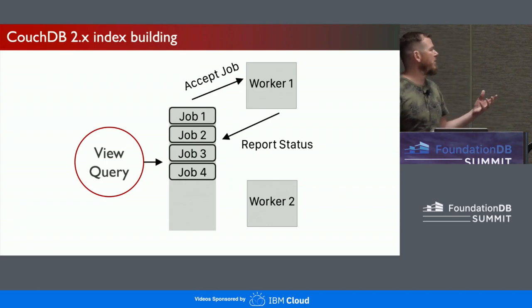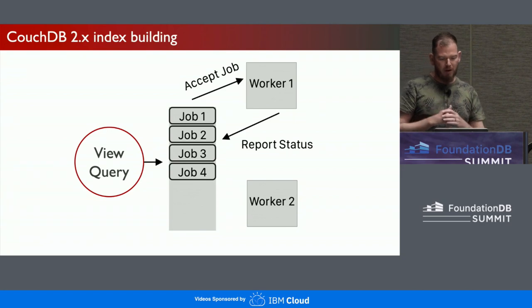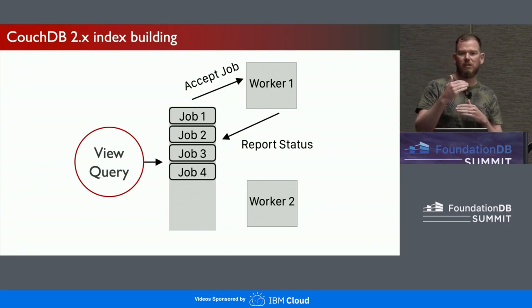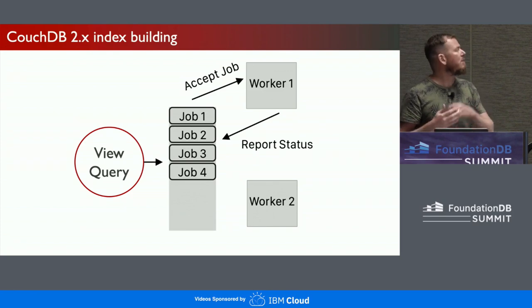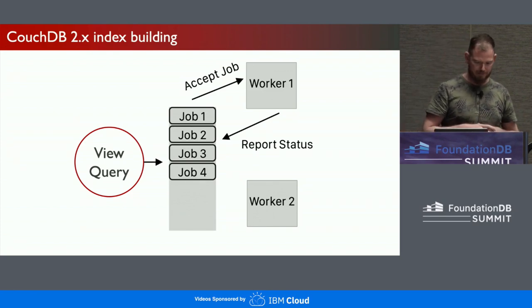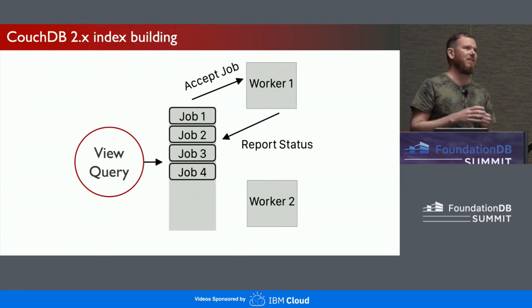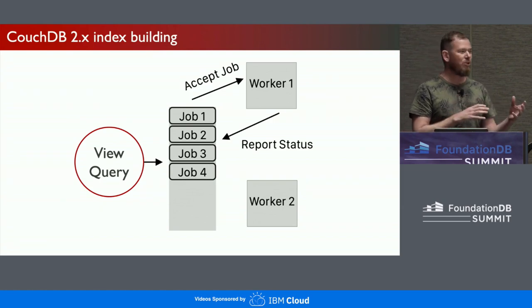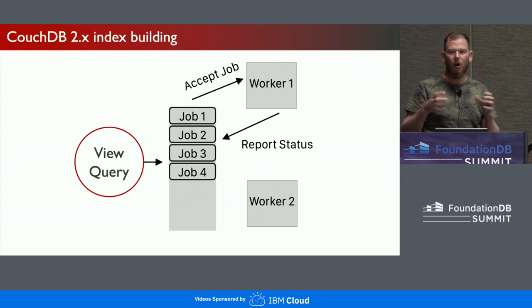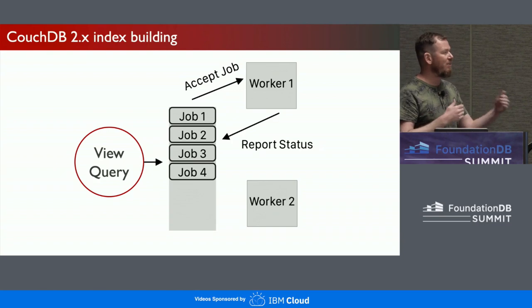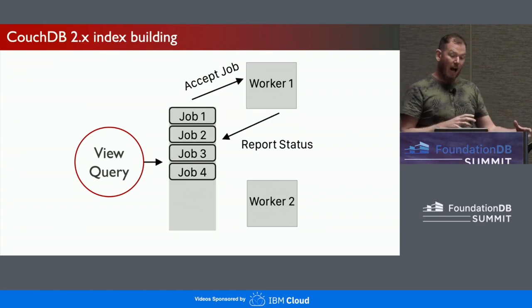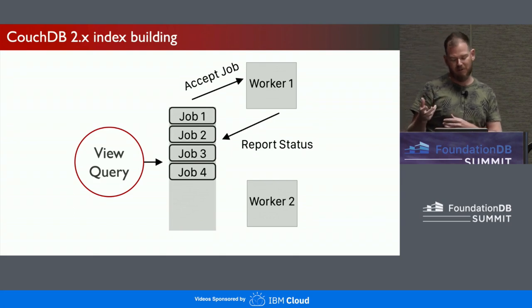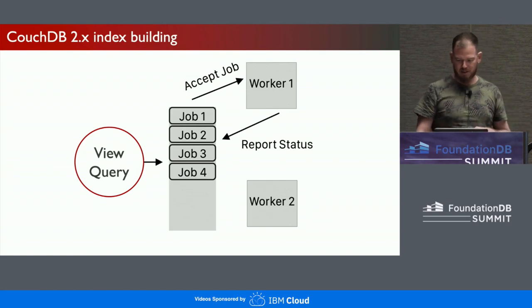When a view query comes in, it immediately puts a job on the background queue, which builds the index to its latest state. A worker accepts that job, builds the view, and reports status back to the view query node. That node then knows the view is up to date, queries FoundationDB, and returns results to the user. There is a trade-off: with original CouchDB, because each index was split into shards, we could build the whole view in parallel very quickly. Now using a single key-value store in FoundationDB, we're building the index one step at a time, so building is a little slower — but querying is significantly faster. This is an area we'll definitely look to improve in the near future.